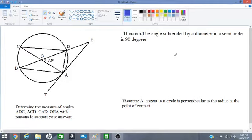Hello everyone, let us work out the circle theorem question. We have a diagram and we are asked to find a measure of four angles with reasons to support our answers.